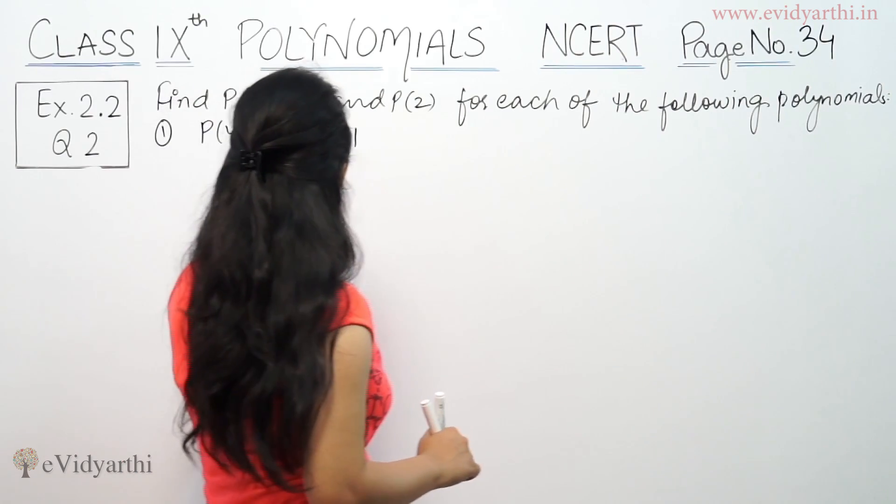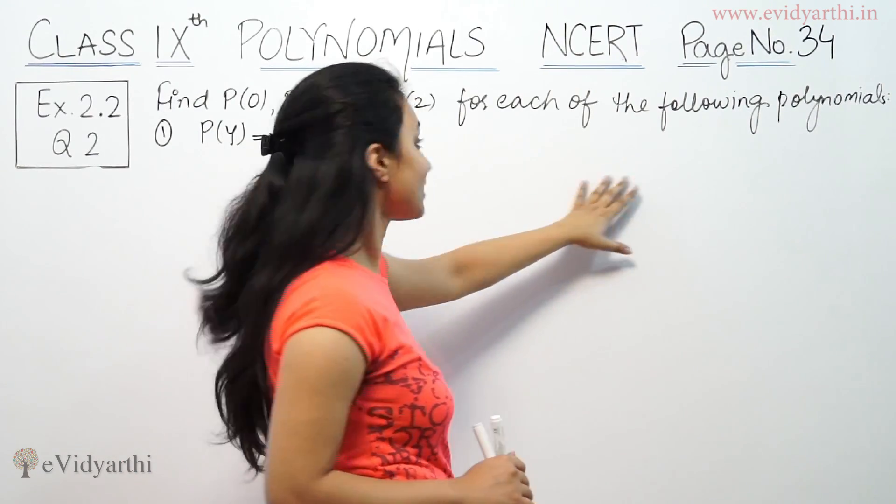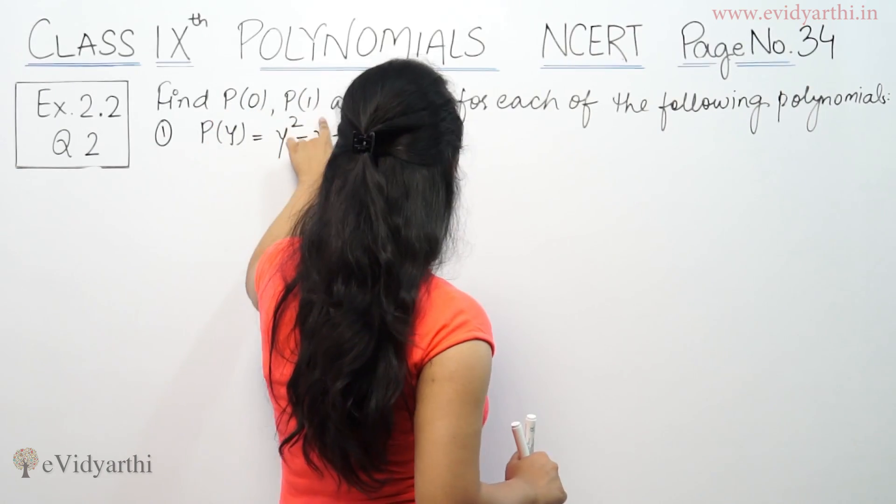The question is: find P(0), P(1), and P(2) for each of the following polynomials. Now we'll find P(0), P(1), and P(2).